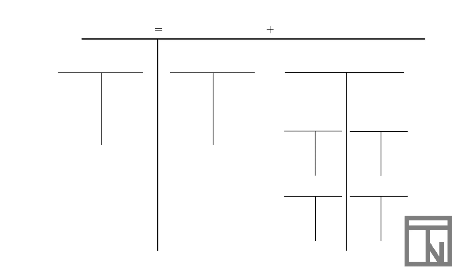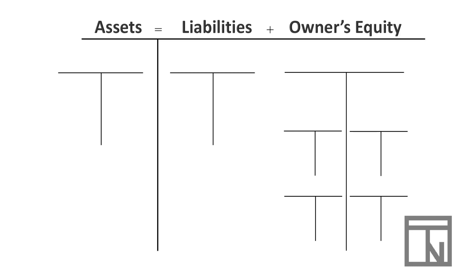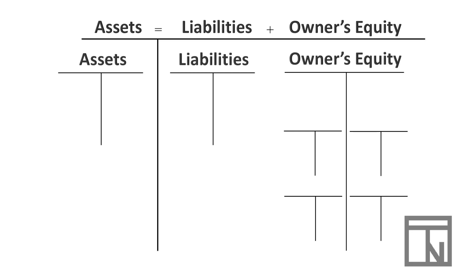One of the first key concepts we've learned is the accounting equation. The accounting equation is often called the foundation of accounting because everything we do is built off of this equation. The equation is assets equals liabilities plus owner's equity. This equation has three basic components: assets, liabilities, and owner's equity. All of the accounts that we will use in our transactions are related to one of these three categories.